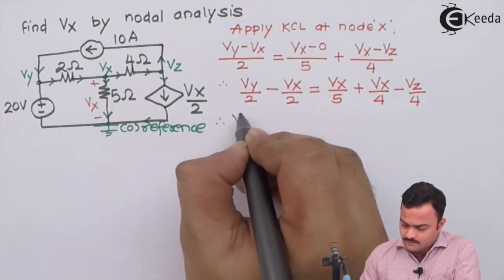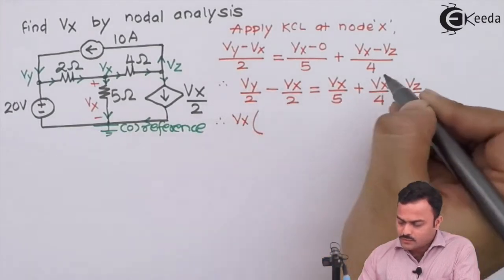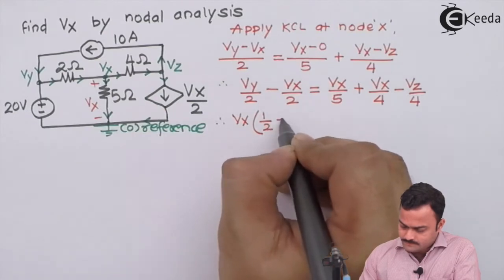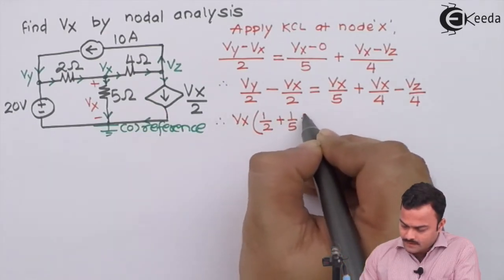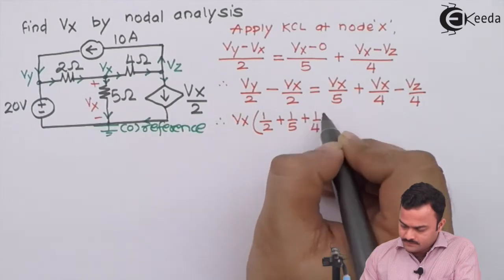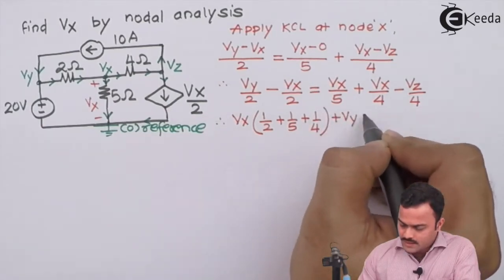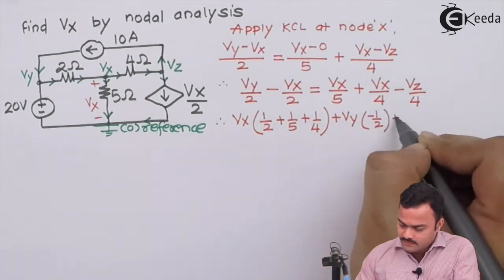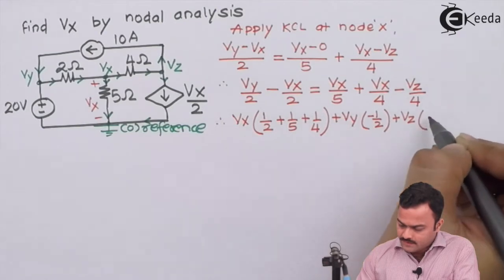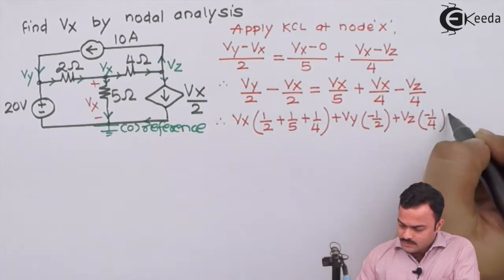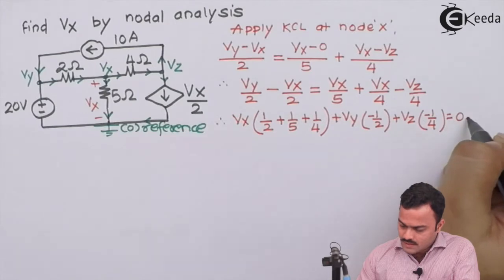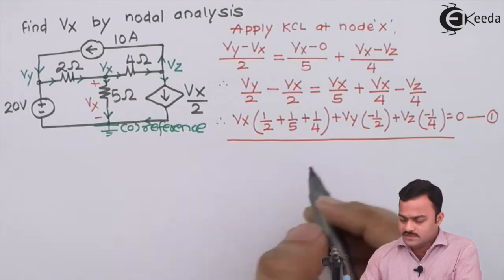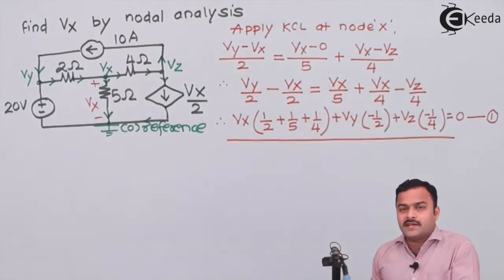Equal to Vx by 5 plus Vx by 4 minus Vz by 4. And after simplifying we will get the equation: let's take this minus Vx by 2 on this side, so we will have a coefficient 1/2 plus 1/5 plus 1/4. Vy will have coefficient 1/2 and Vz will have coefficient minus 1/4 equal to 0 as equation number 1.